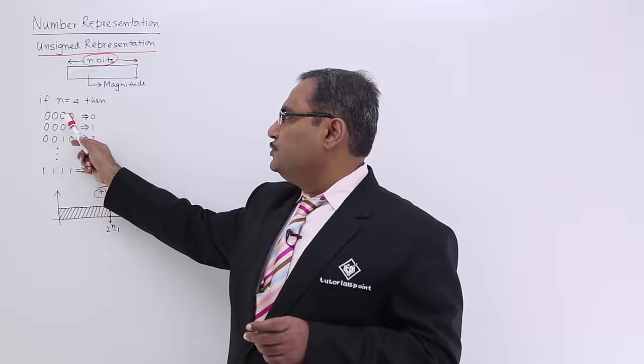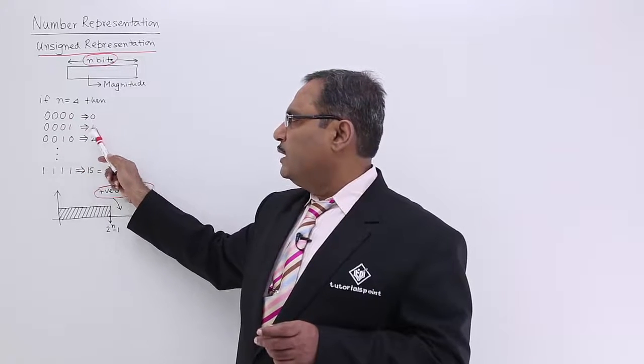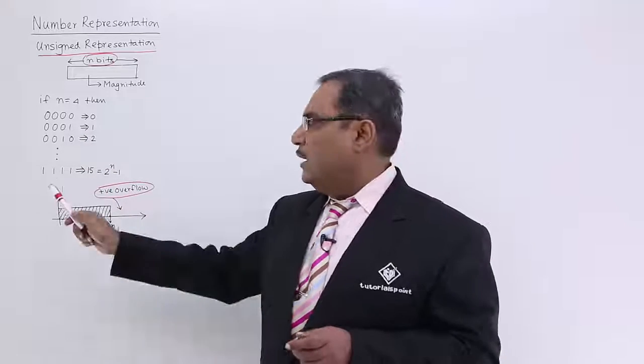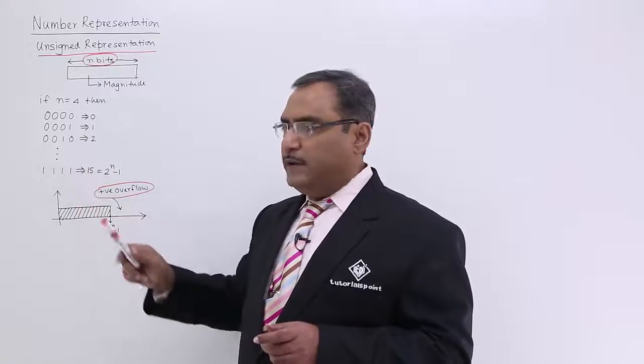Then the number can have 0000 to 1111 combinations, from the lower limit to upper limit. 0000 means 0, 0001 means 1, 0010 means 2. In this way, I can proceed.